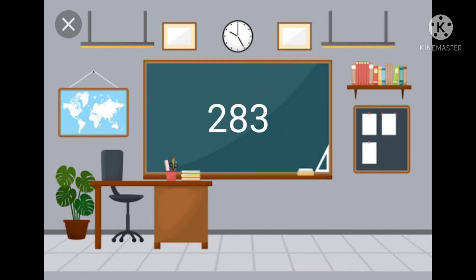Look at this number. Here, two is in the hundreds place, eight is in the tens place, and three is in the ones place. Children, how can we read it? We read the hundreds first, then read the last two digits together: eighty-three. Two hundreds, eighty-three. We can write it as two hundreds, eighty-three.